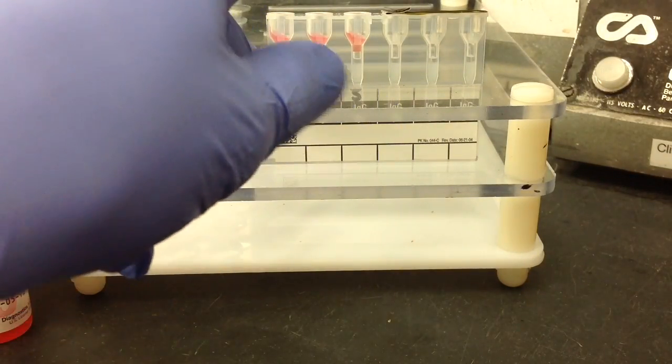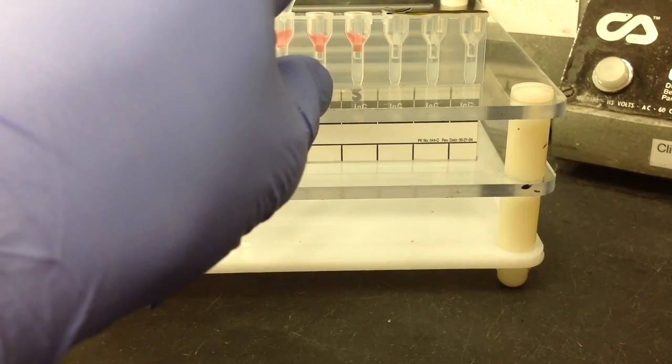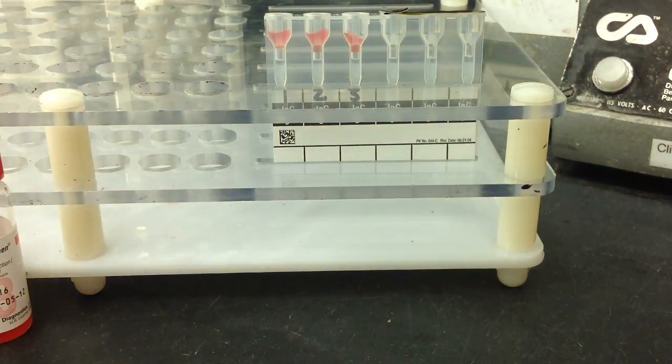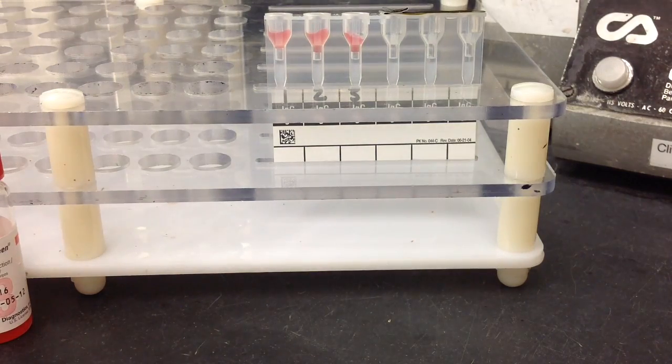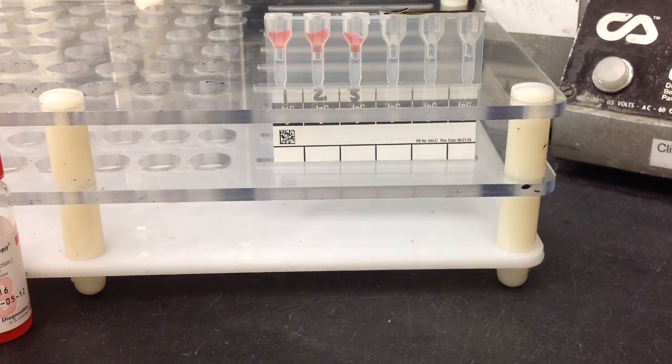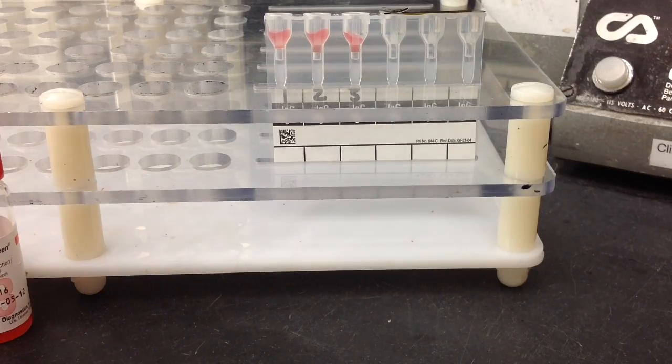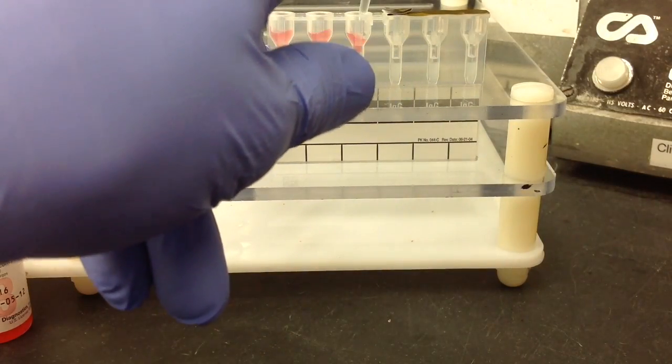So I'm going to add 25 microliters of the negative QC to the one and two reagent red cells and then I'm going to add the positive to the third. And just remember it's 25 microliters for all of these.